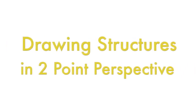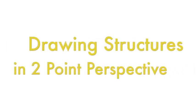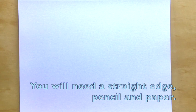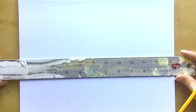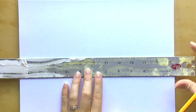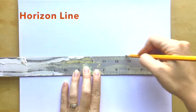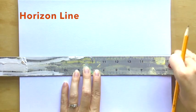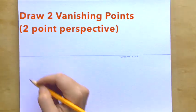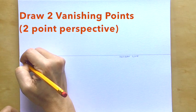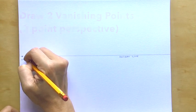Welcome to Drawing Structures in Two-Point Perspective. You'll need a straight edge, pencil, and a piece of paper. Start by drawing your horizon line — a line that goes horizontally from one side of your paper to the other. You'll be drawing your vanishing points on this line as well, one on the left and one on the right. This is where all of your lines are going to intersect and merge.